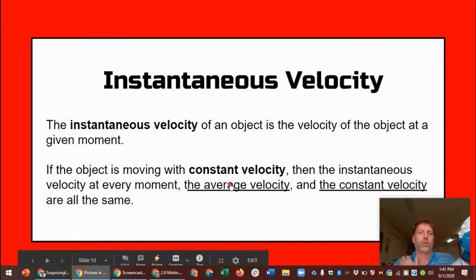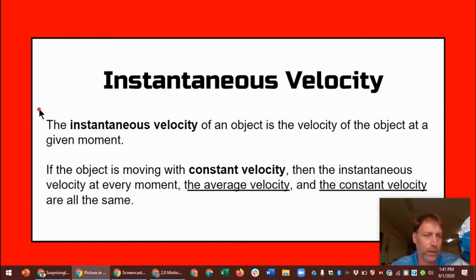Instantaneous velocity, as your book says, is the velocity at any given moment or time. So the object is moving with a constant velocity. This is the key part. It's moving constantly. It's not changing speed. It's not slowing down or speeding up. There's no acceleration or deceleration, which we'll learn about in a few lessons.